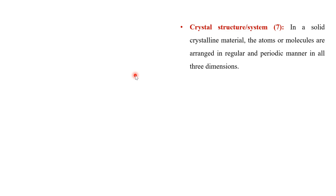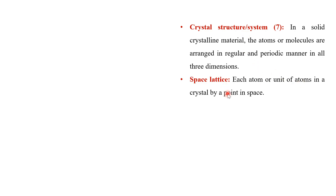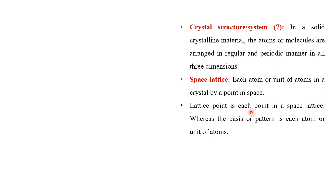In solid crystalline material, atoms or molecules are arranged in a regular three-dimensional manner. There are seven crystal systems. The smallest feature present in a crystal structure is the unit cell, and when unit cells are repeated indefinitely in all three directions, they give rise to the crystal structure. If we replace each atom with a point in space, those points form the space lattice, and each point is known as a lattice point.